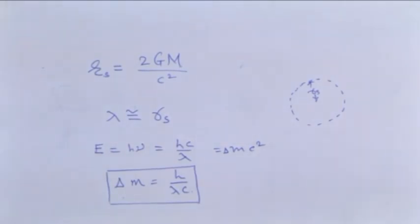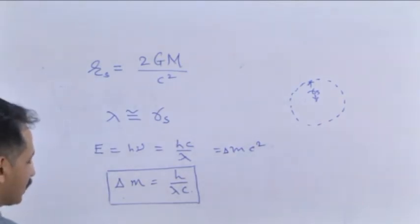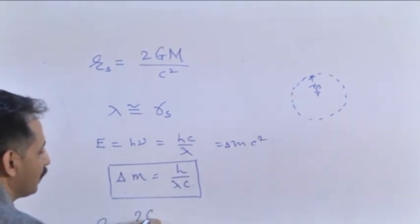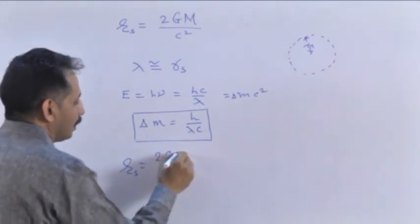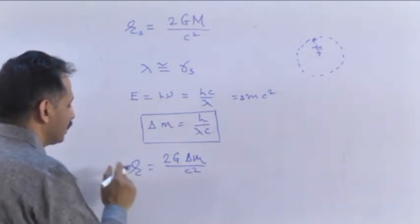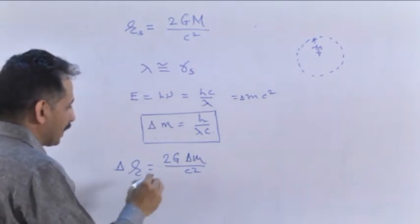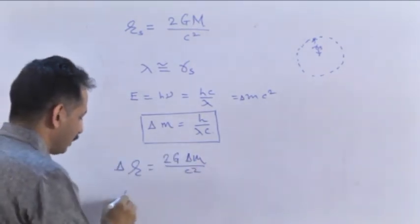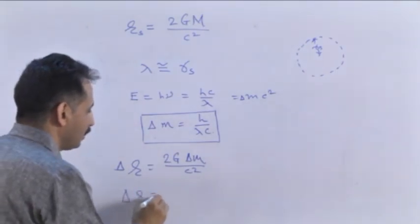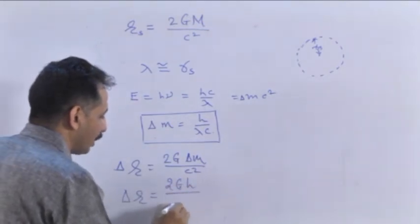Now, this causes increasing Schwarzschild radius because it depends on mass. So delta rs is equal to 2G delta m upon c squared. This is the increasing radius of the black hole. Now, we shall substitute delta m from last equation so that delta r is equal to 2Gh upon lambda c squared.